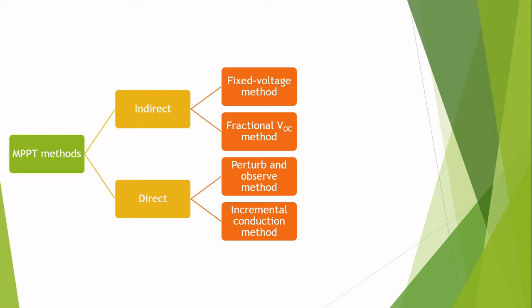Maximum power point tracking algorithms can be divided into two types of methods. The first are the indirect methods and the second are the direct methods. The indirect methods include the fixed voltage method and the fractional open circuit voltage method. The direct methods include perturb and observe method and the incremental conduction method.